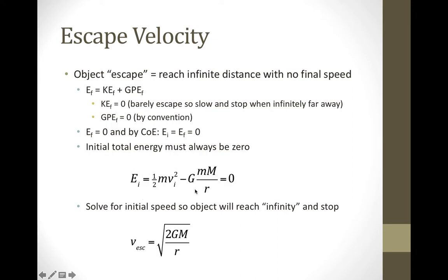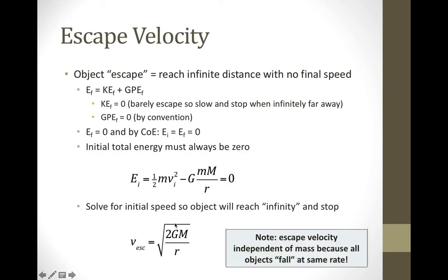The initial energy is the sum of the kinetic and the potential at the surface of the Earth: one-half mv squared minus GMm over r, and those two must add up to zero. When we solve this, the mass of the object cancels out. Solving for the initial velocity gives us the escape velocity, which is the square root of 2GM over r. The mass of the object is irrelevant because all objects effectively fall at the same rate.